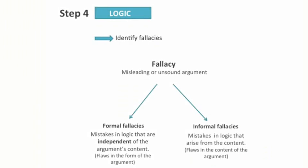The fourth step is to assess the logic of the argument. You should ask: is the argument sound? To do this, you need to be able to identify potential fallacies. A fallacy is a misleading or unsound argument. We distinguish two types: formal fallacies, which are invalid arguments due to mistakes in reasoning or logic independent of the content; and informal fallacies, which are due to mistakes in reasoning related to the content. Today we will focus on informal fallacies, as they are the ones most often met in arguments around us — in media, for instance.